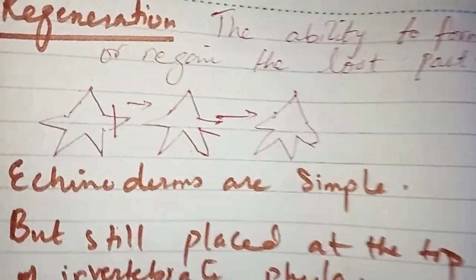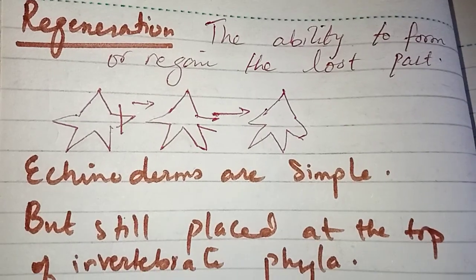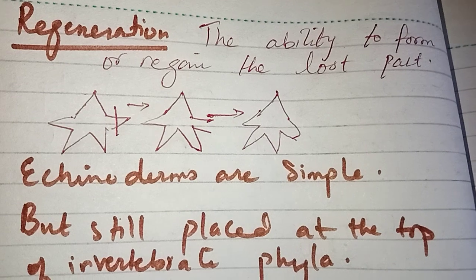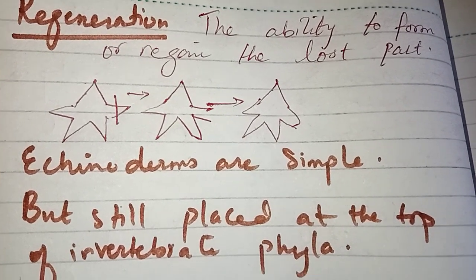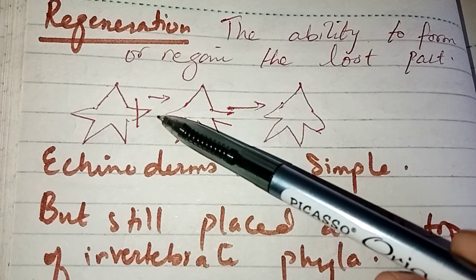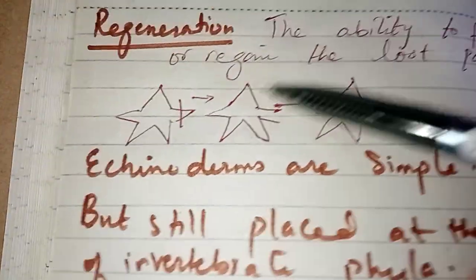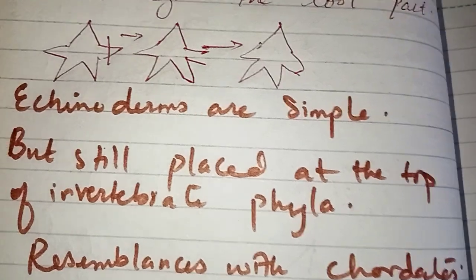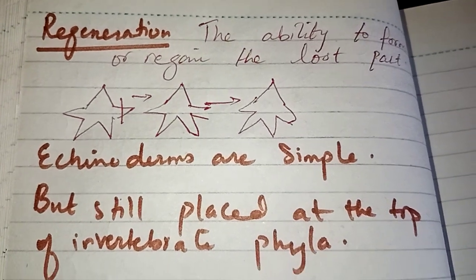An important feature is regeneration. Regeneration is a process in which the organism has the ability to regrow cut or lost parts. For example, if a starfish has an arm cut, it will regenerate that arm again. However, one important thing to remember is that if the central disc — where the nerve ring is located — is damaged, then regeneration will not occur. Regeneration only happens for lost parts away from the central disc.